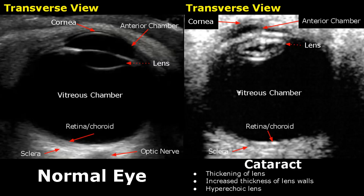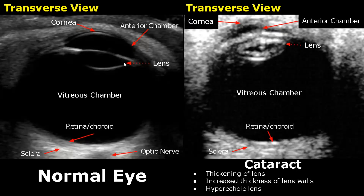The eye can be visualized very well in a transverse view. This thin layer is the cornea. Behind it is the anechoic anterior chamber. Posterior to it is the lens, which is also anechoic with a thin hyperechoic border. The vitreous chamber is the largest chamber in the eye and is also anechoic.